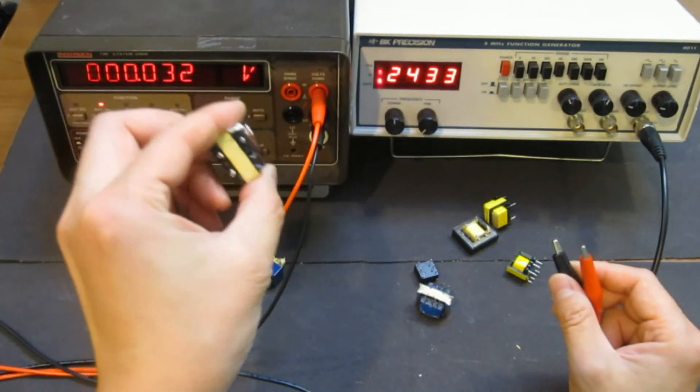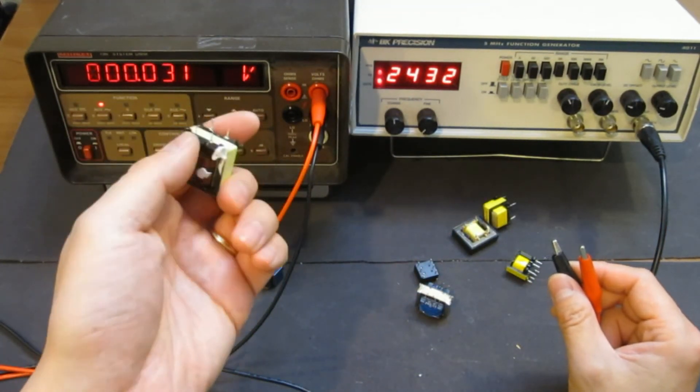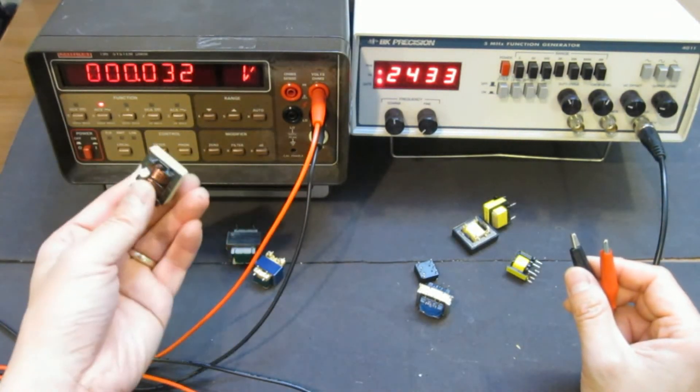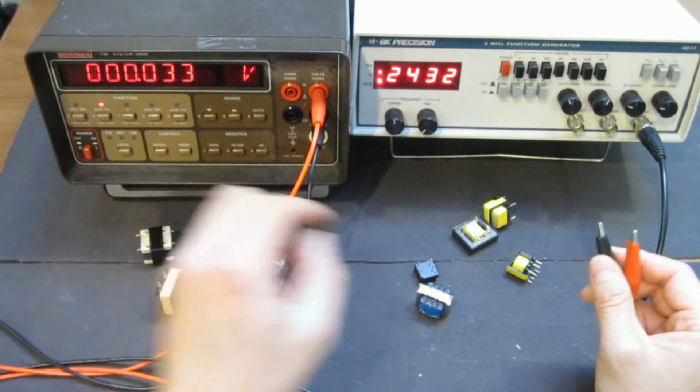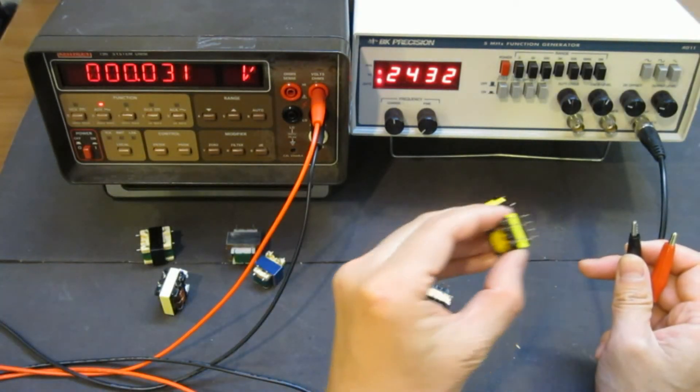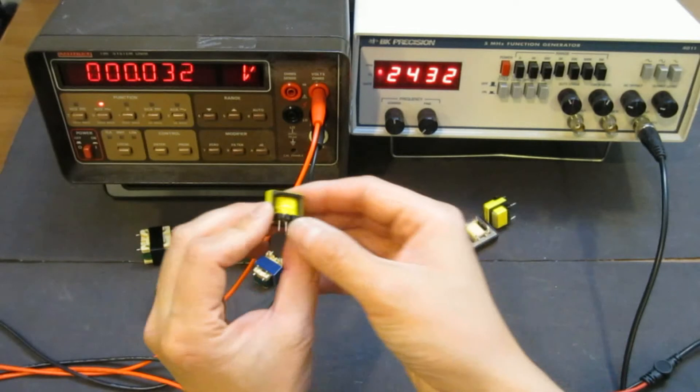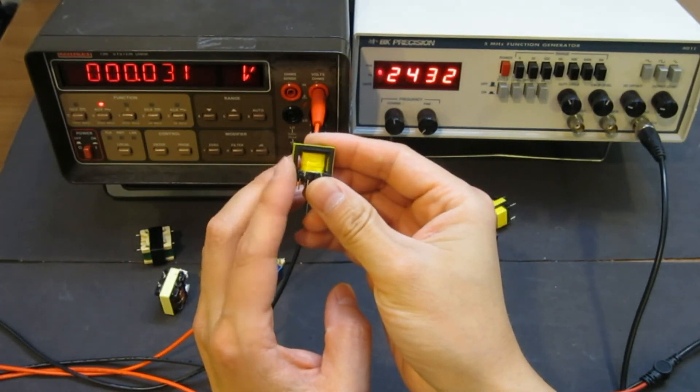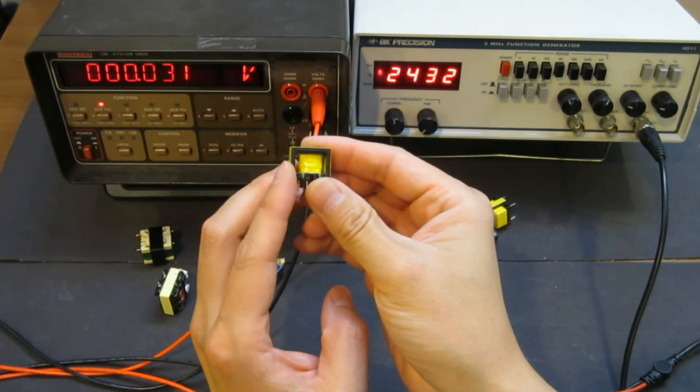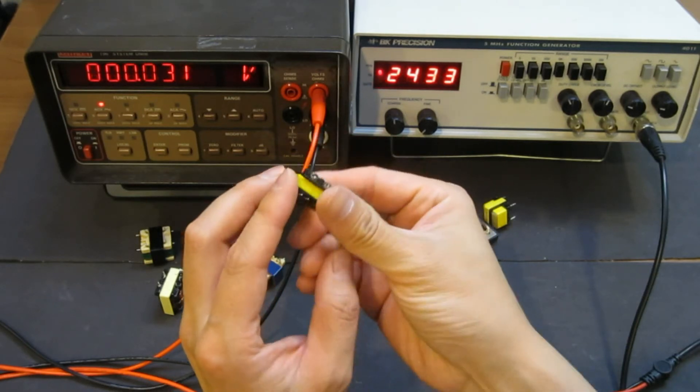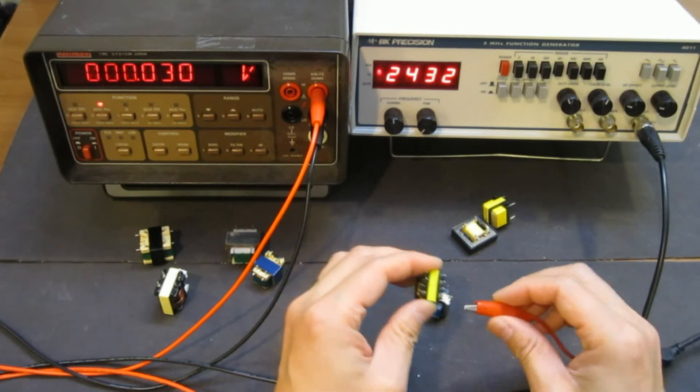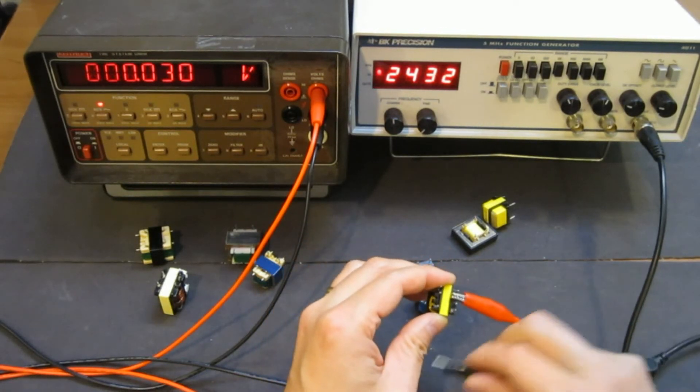So this one we know is a common choke, and so essentially just 1 to 1, so we don't really need to test this one. And for this smaller one, so let's take a look at this one. This one is a ferrite core. So we can expect that this one can operate up to a pretty high frequency. So let's take a look at this assumption. Now we put the input here, and we put our output here.